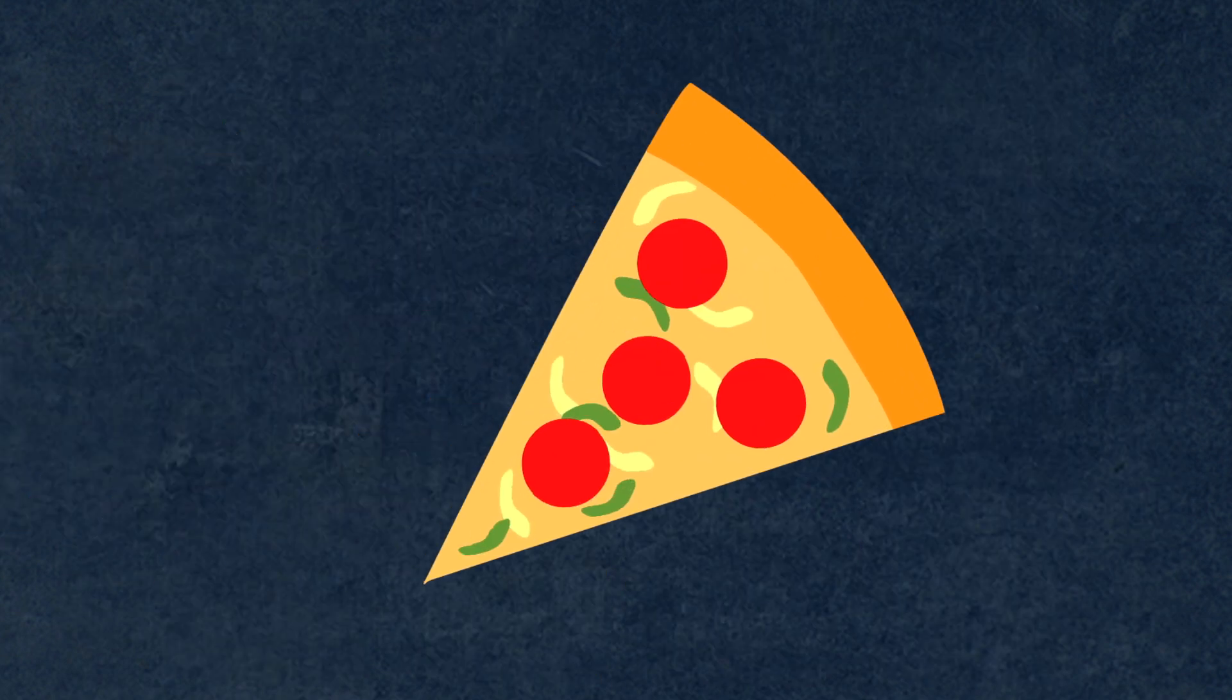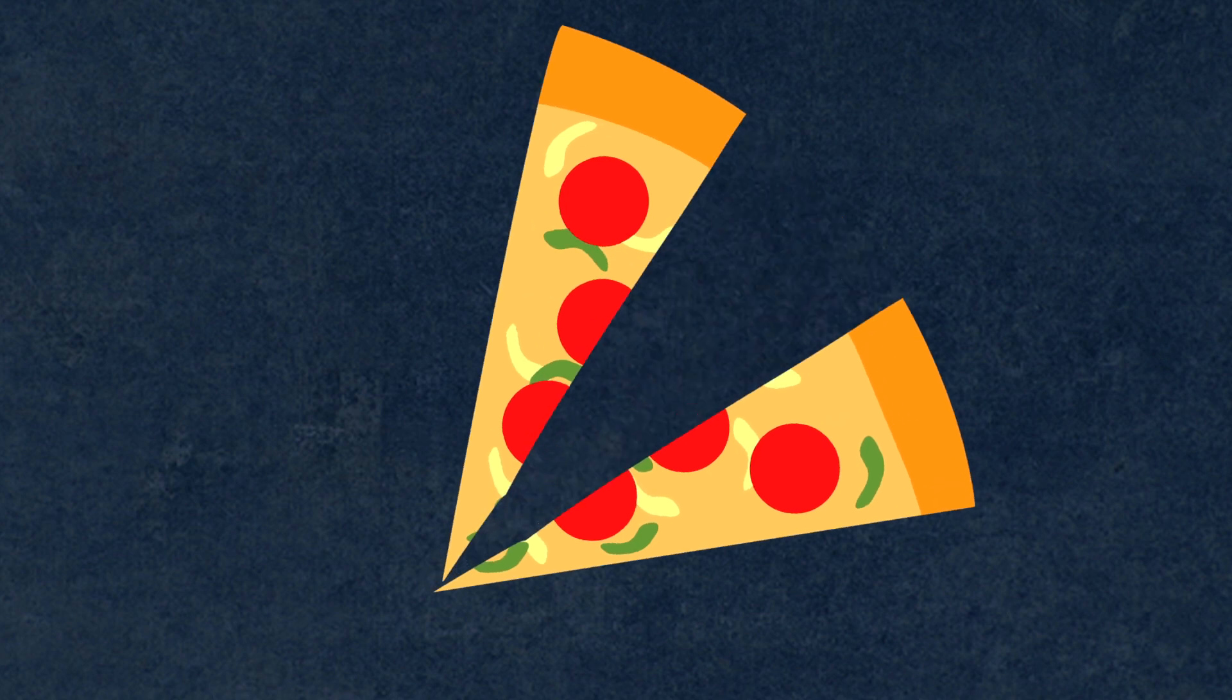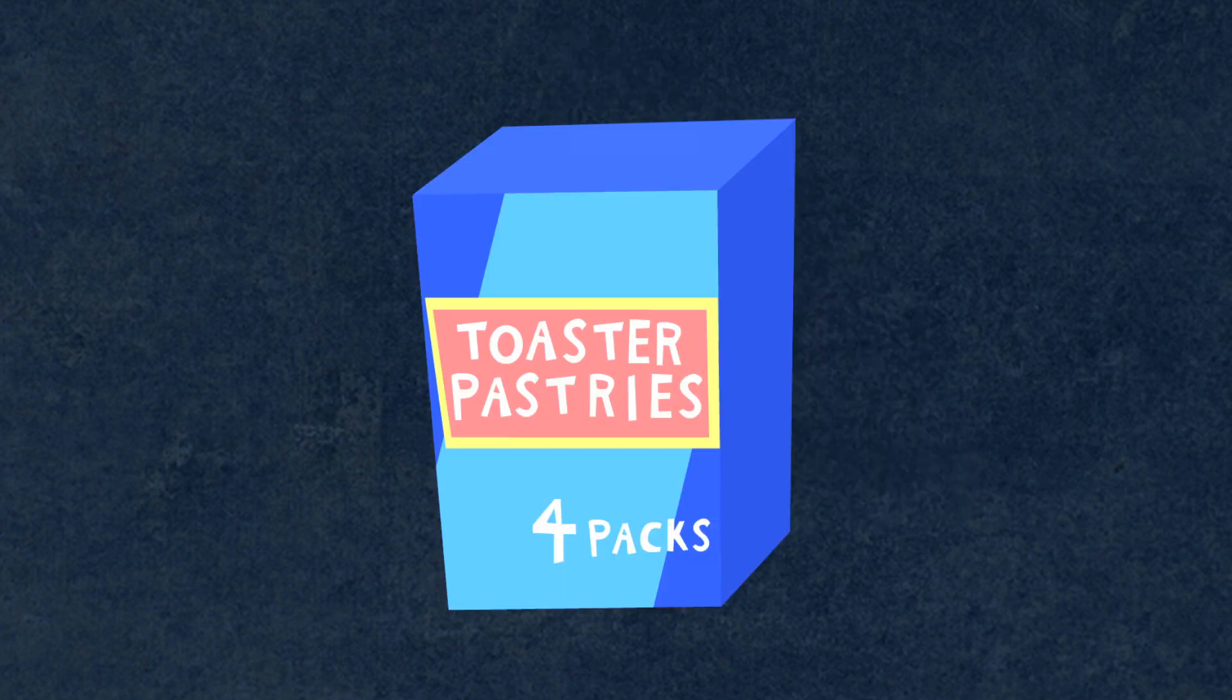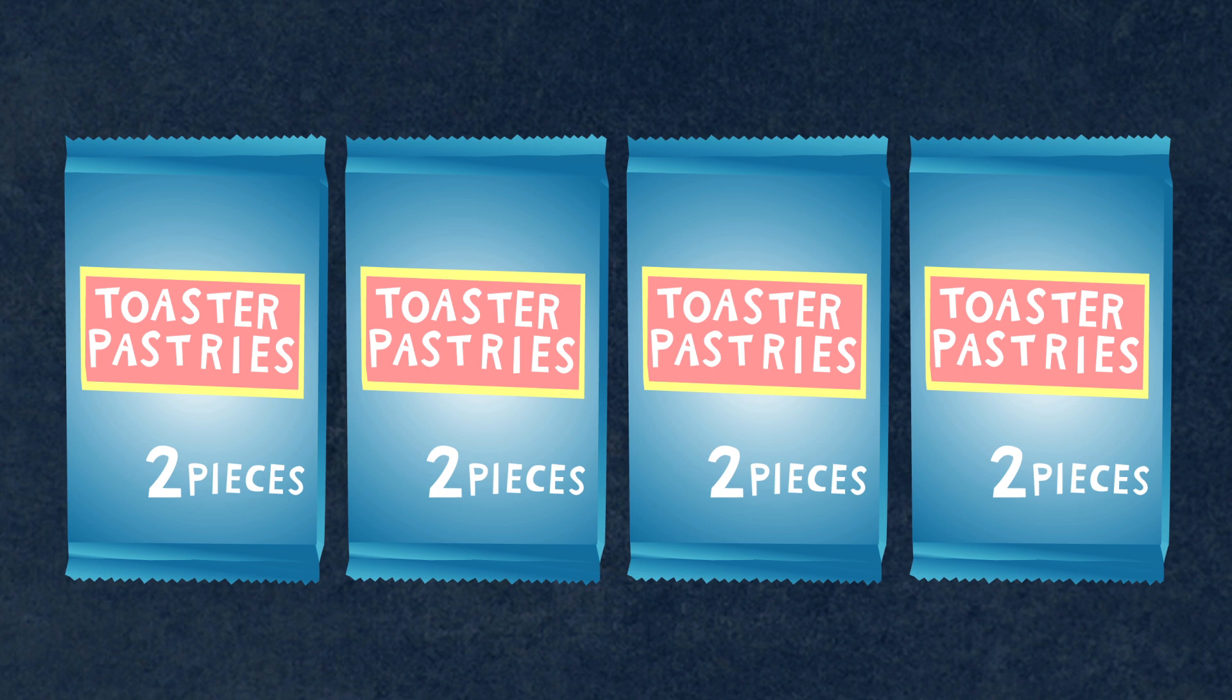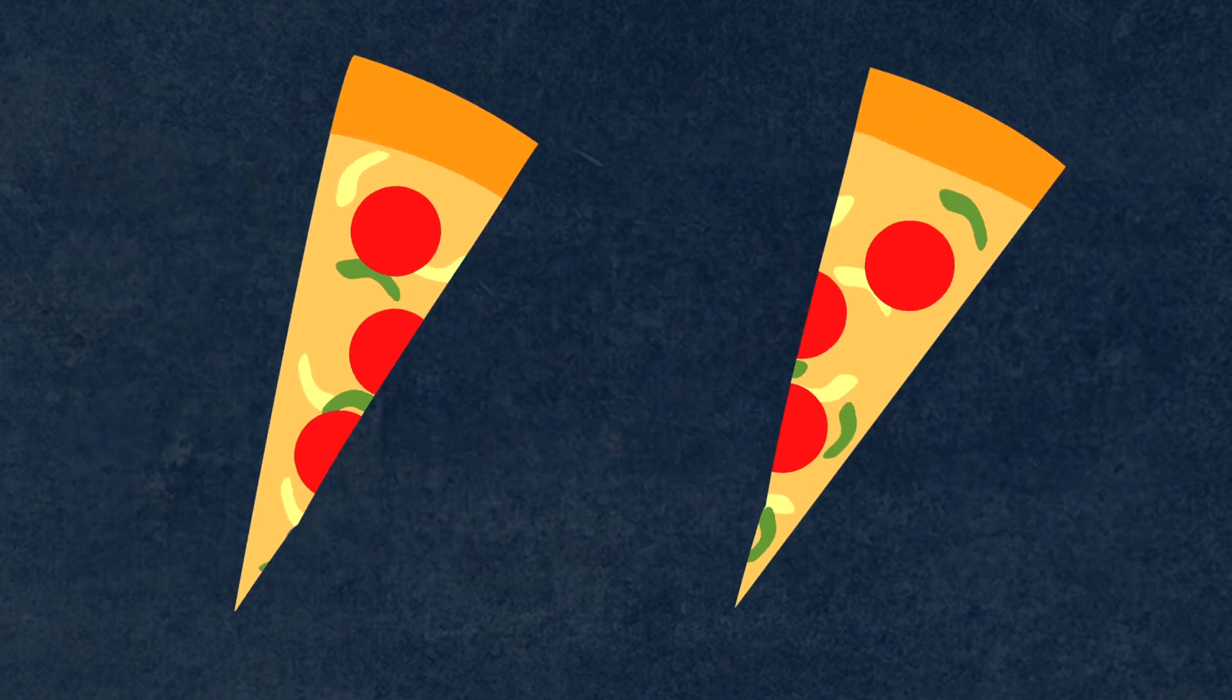And when I share a slice of pizza with a friend, we have to cut it into two smaller pieces. So a box of toaster pastries is composed of composed units, and when I split a slice of pizza, I'm partitioning a partitioned unit.